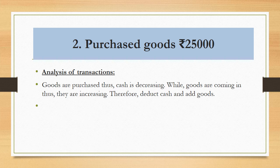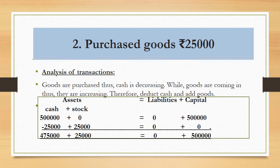Next, purchases goods for rupees 25,000. When a businessman purchases goods, it increases his stock. But for increasing that stock he has to pay some cost, which reduces his cash. Therefore one asset is increasing and another is decreasing. Cash mein se 25,000 minus kar diya kyunki stock kharidne ke liye 25,000 pay kiya, aur stock mein 25,000 plus kar diya. Please keep in mind: goods are recorded with the name of stock only.